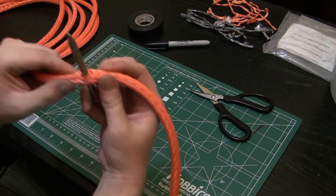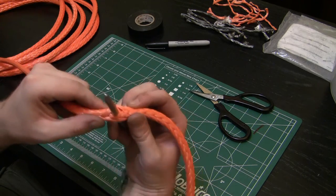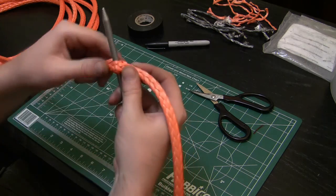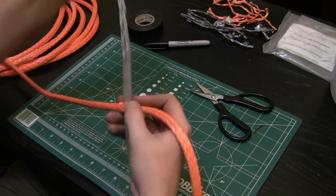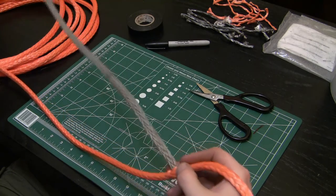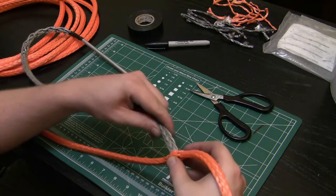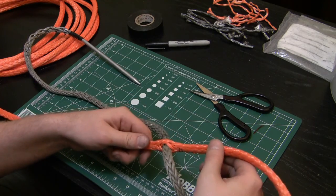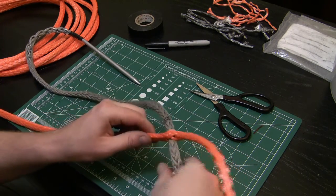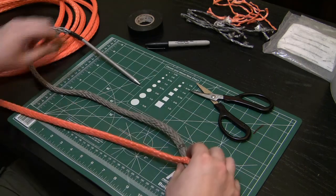You're going to pass it through until you see your mark two. From here you're going to birdcage this and insert your fid into the middle.